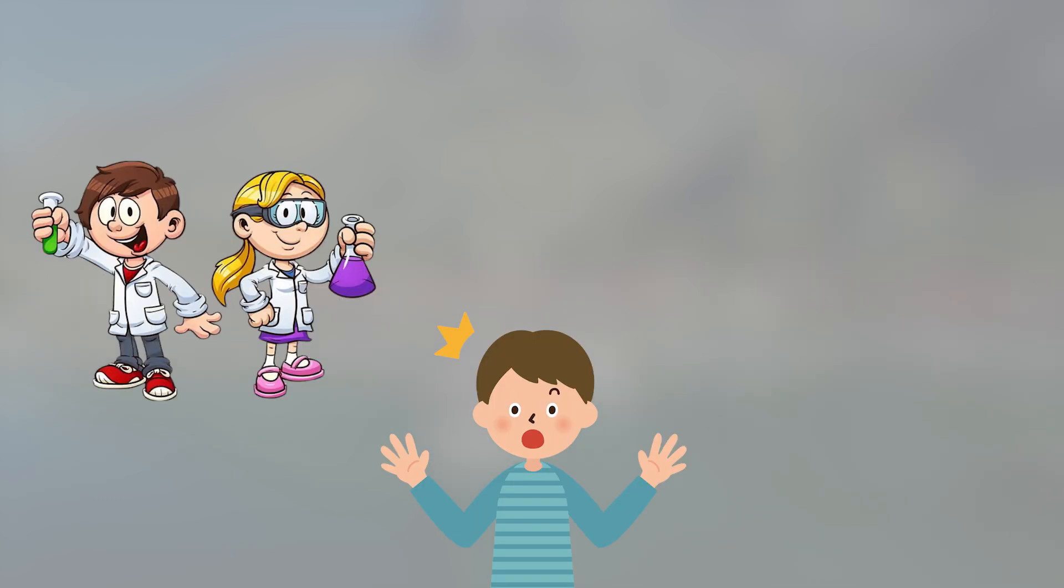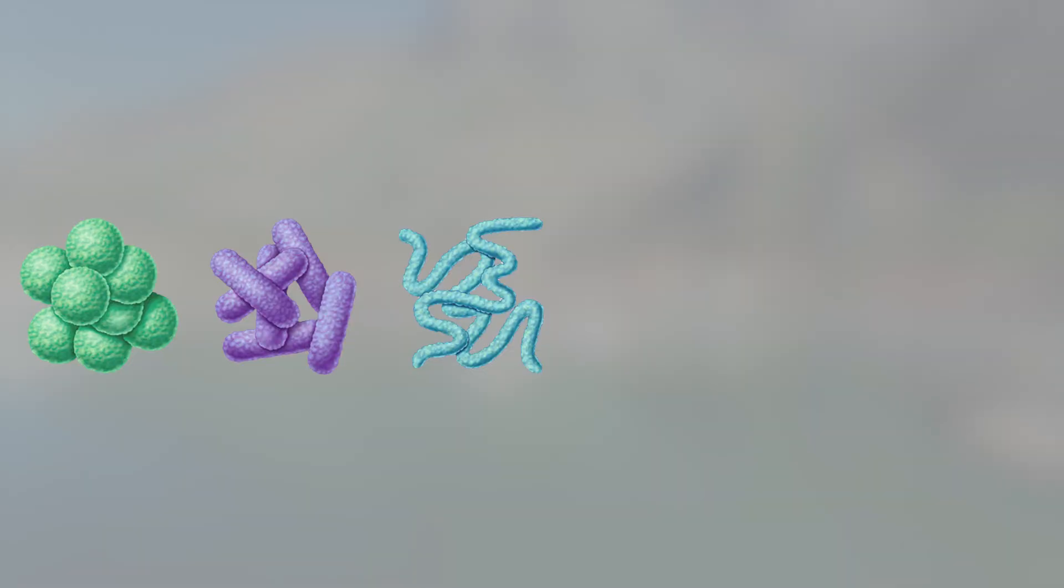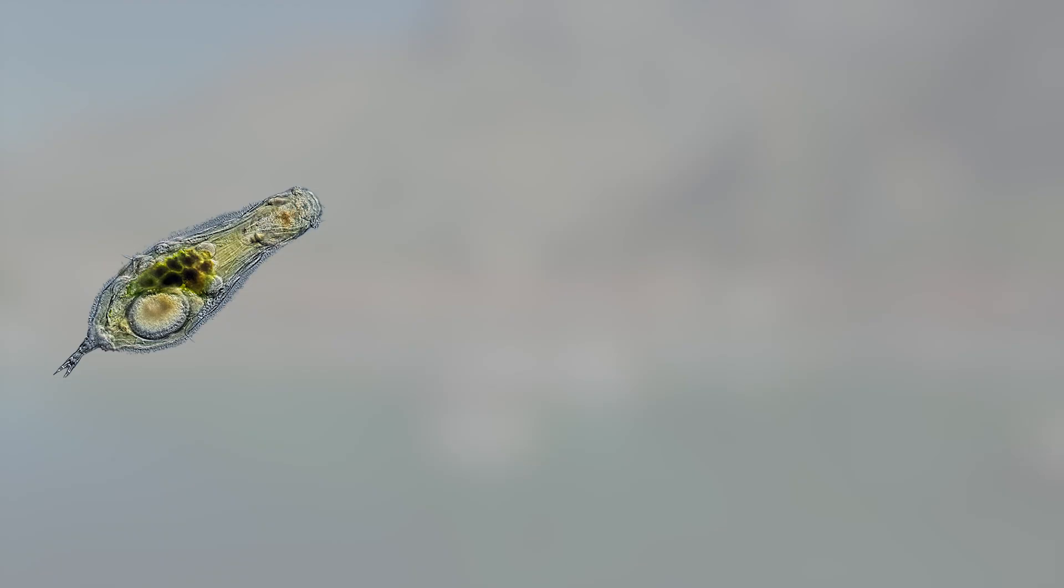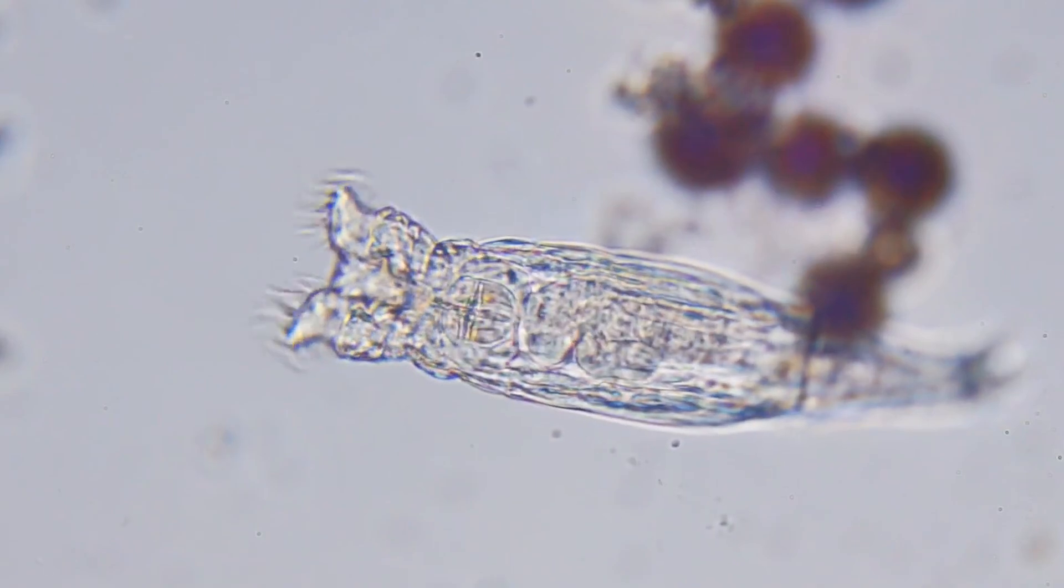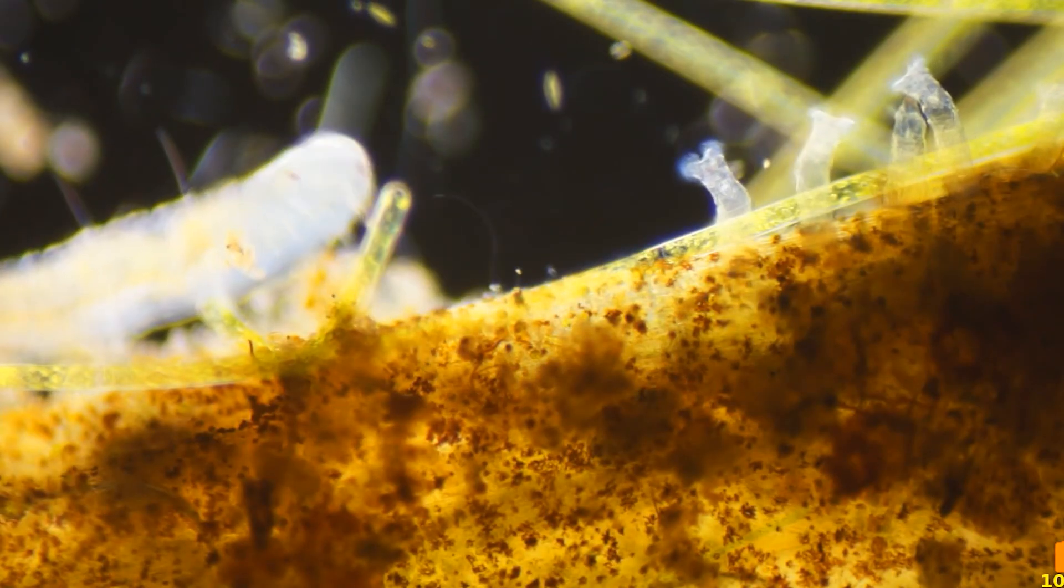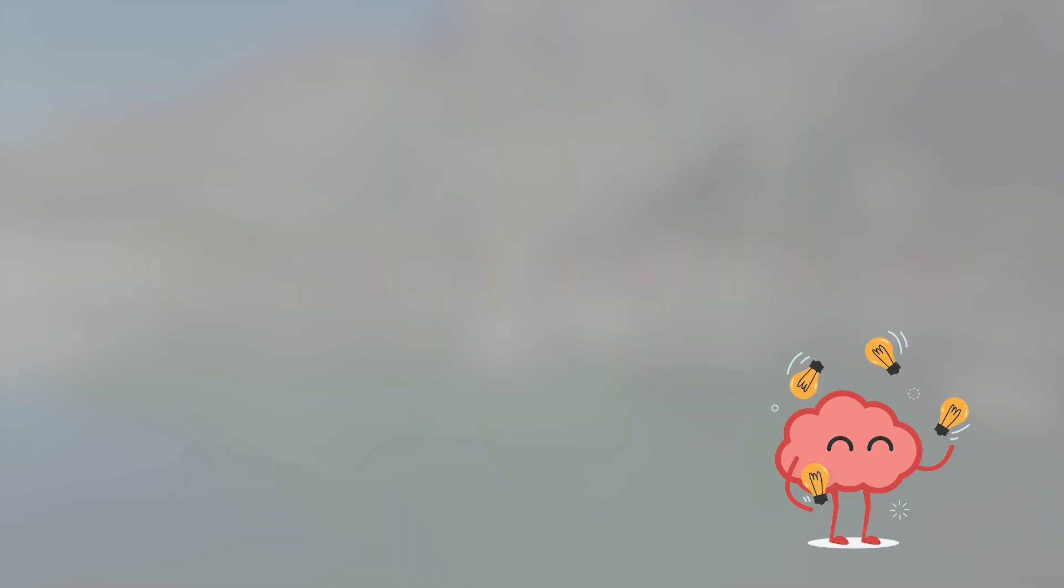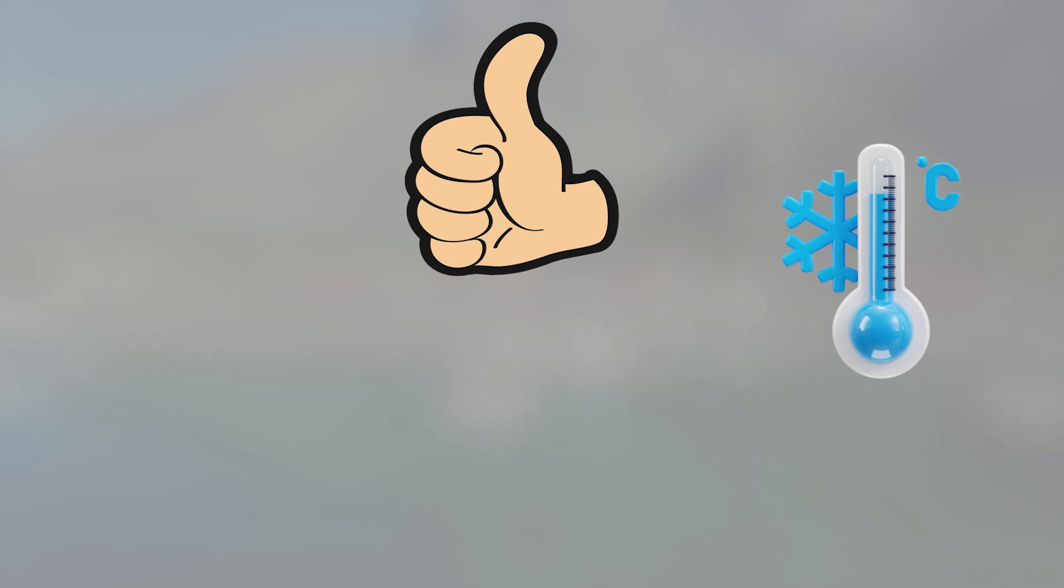What shocked scientists most wasn't just that the rotifer revived, it was how much it remembered. Unlike simple microbes, this organism retained behavioral patterns immediately after thawing. It knew how to move, how to feed, how to reproduce without relearning anything. There were no signs of neurological delay or biological confusion. That level of retention suggests that memory, or at least programmed biological function, can survive deep freeze without degradation.